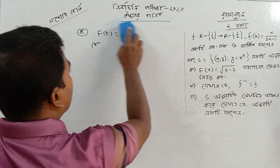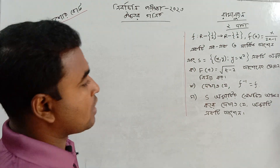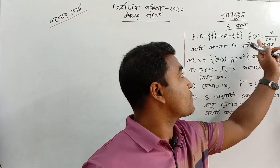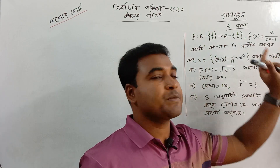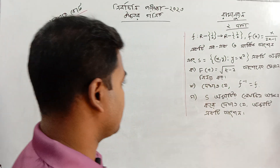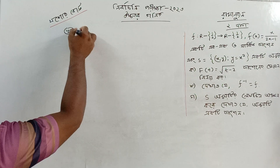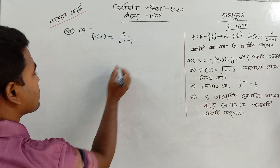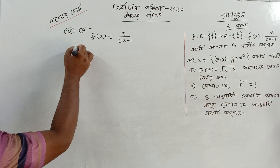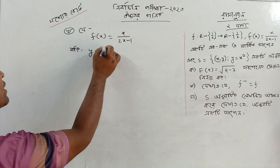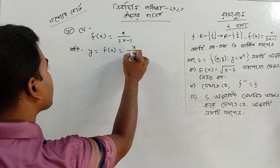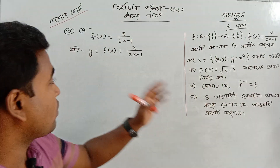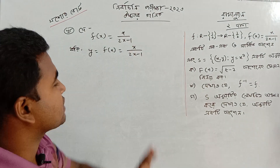What number are we going to find? F inverse is equal to F, meaning the function of F is f(x). If you want to find the inverse, f(x) is equal to x divided by 2x minus 1.